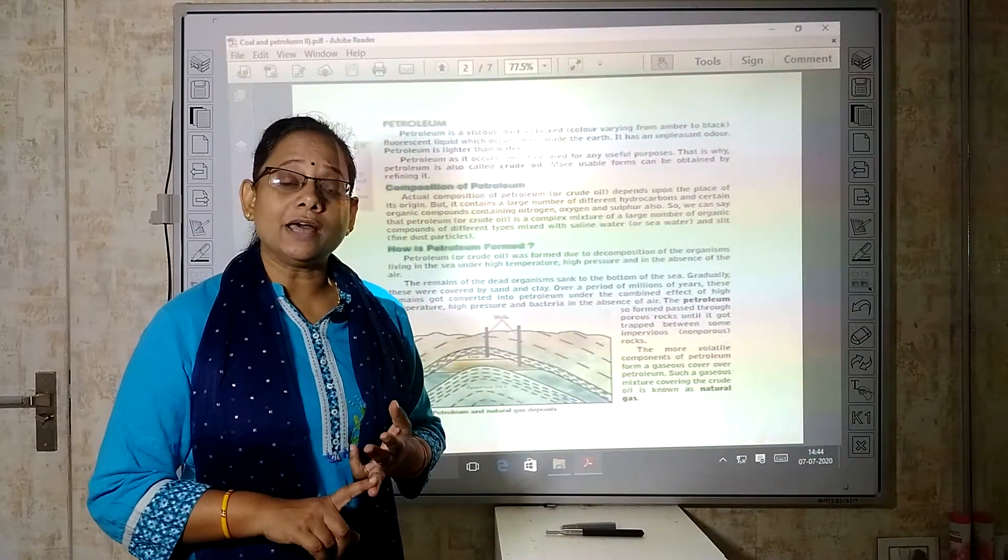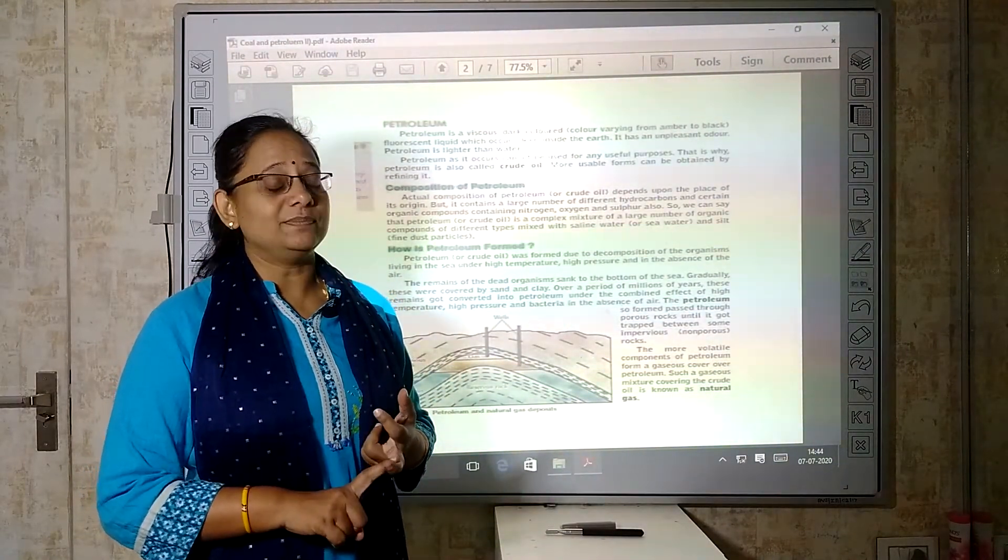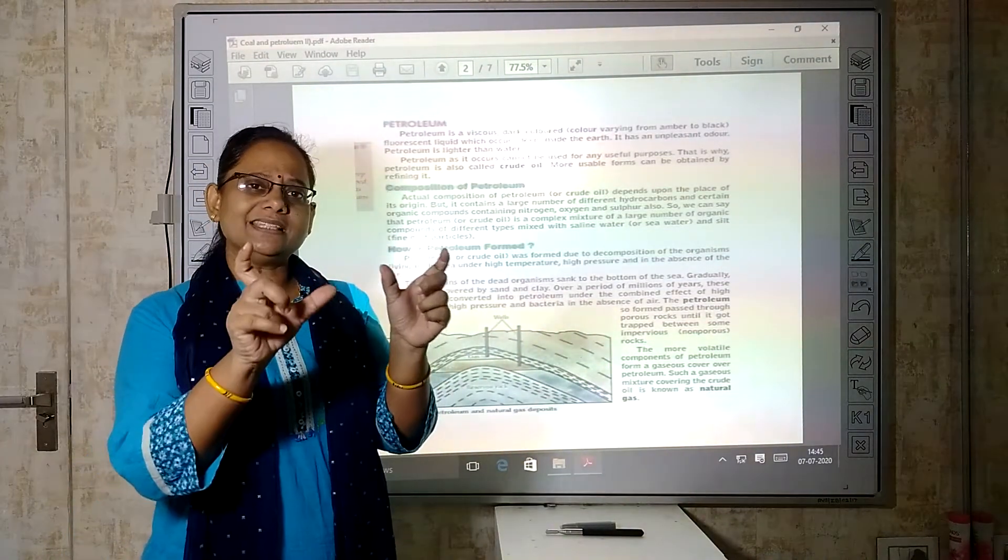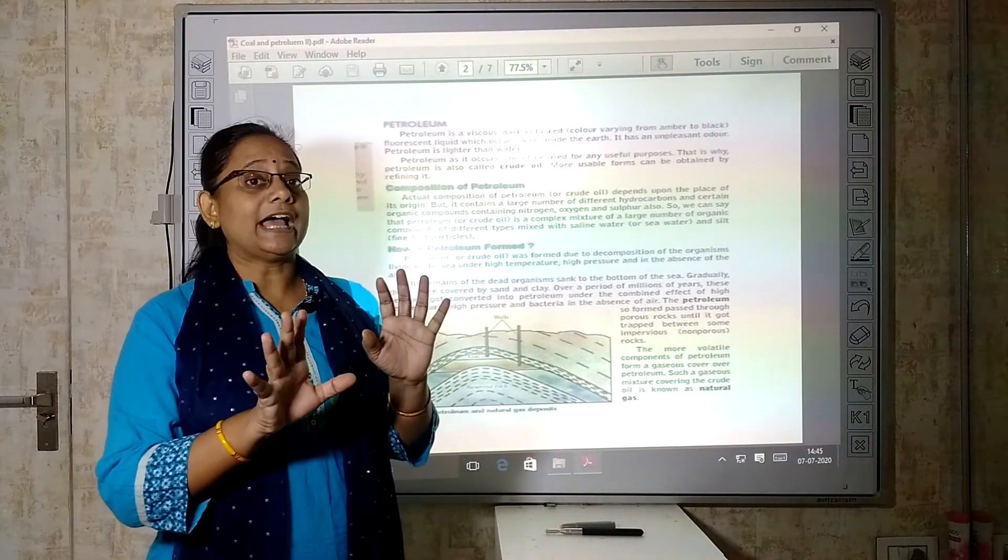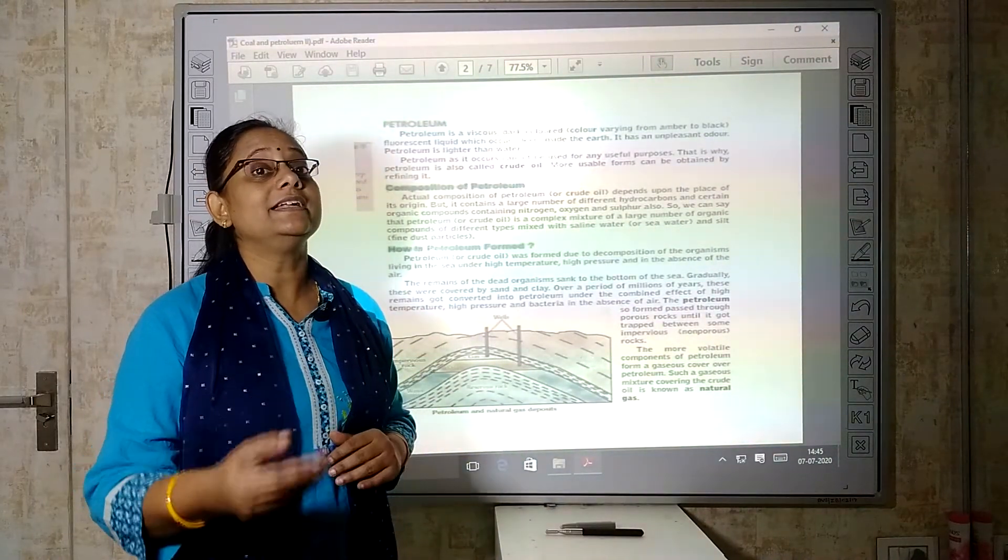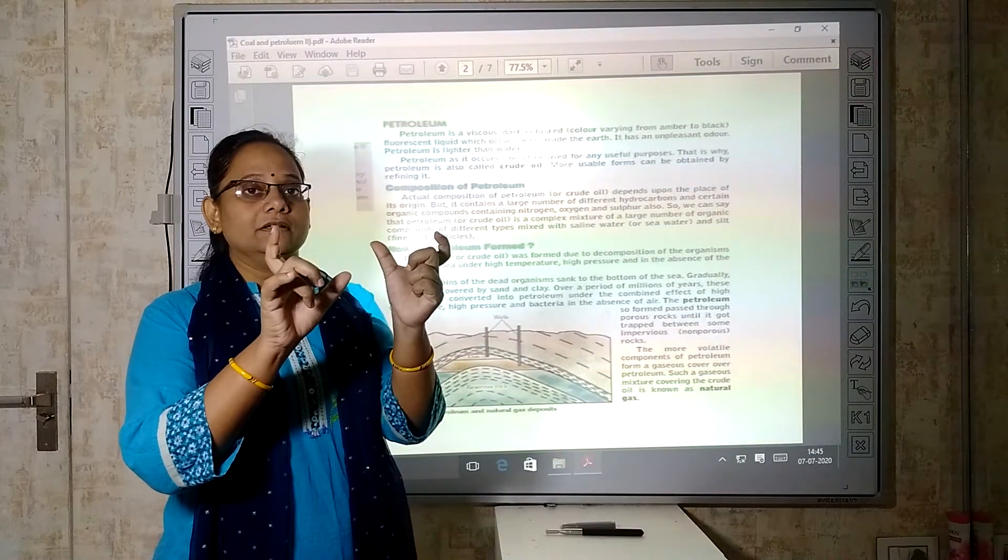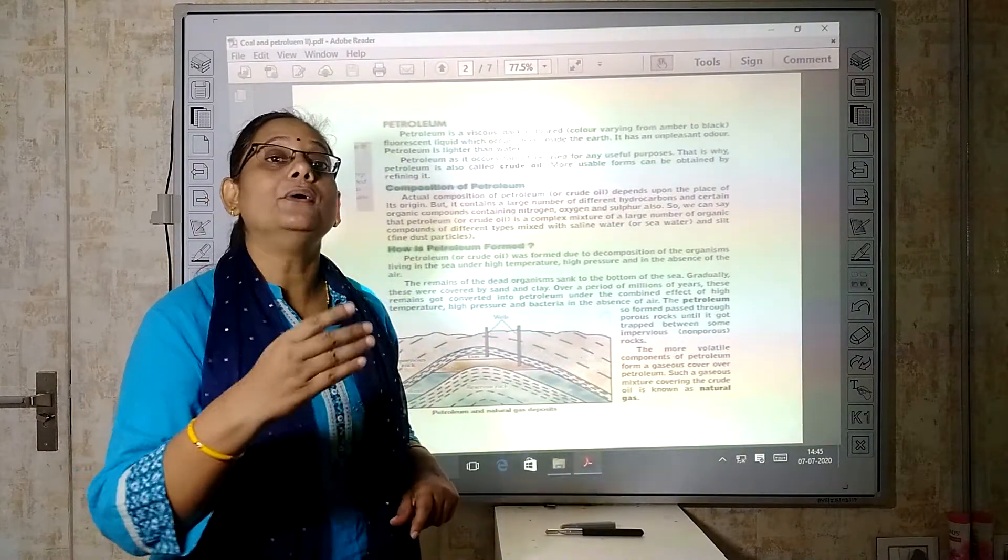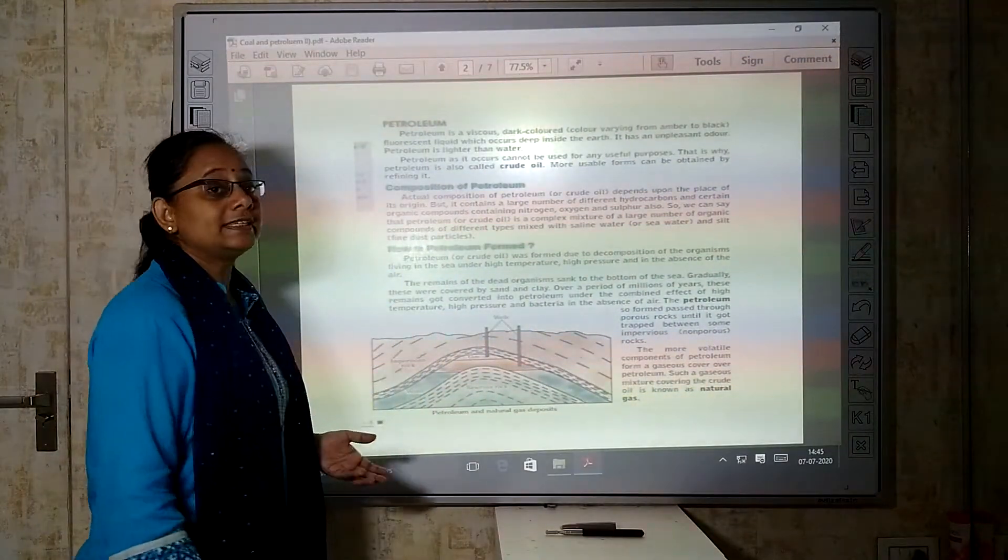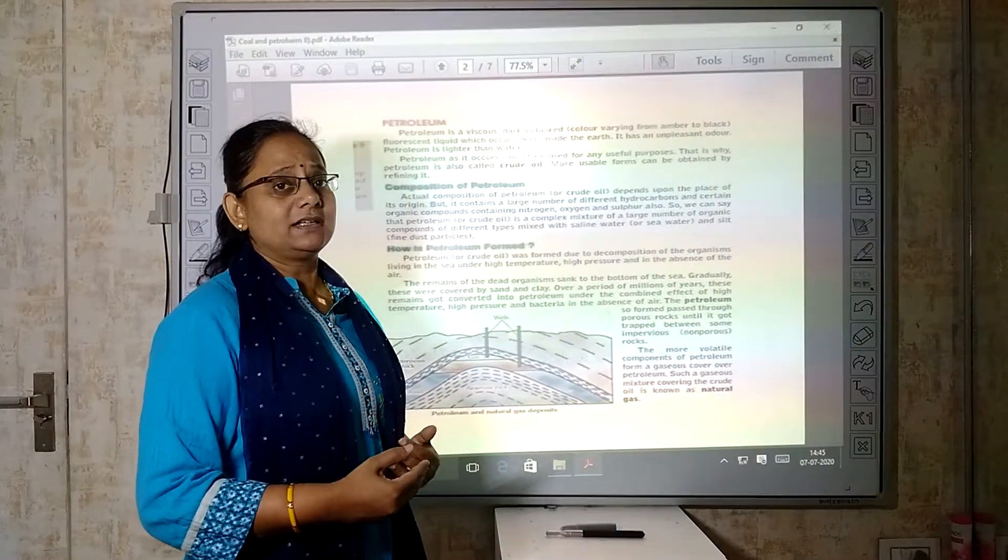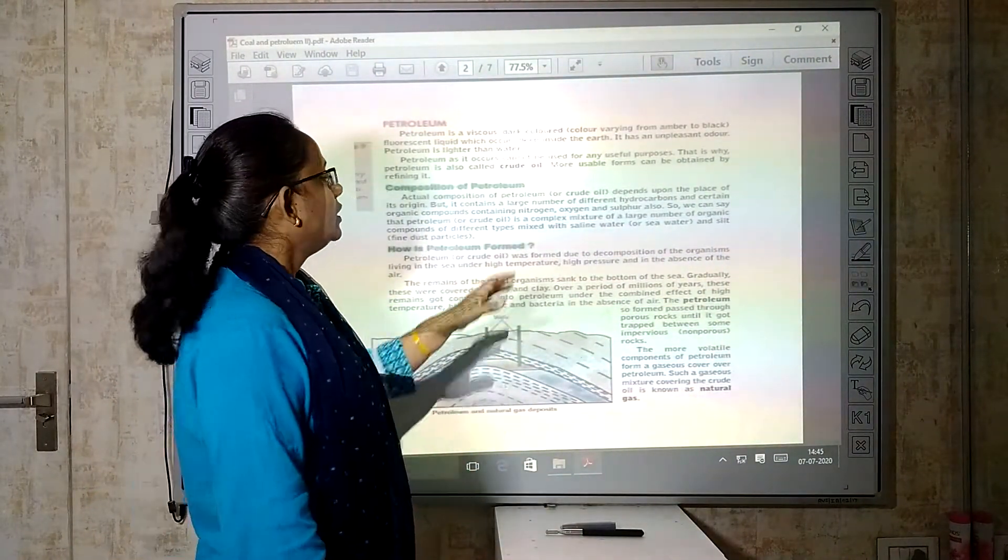Now, what are hydrocarbons? Hydrogen plus carbons form hydrocarbons. That is, it is a mixture of hydrogen plus carbon. Carbon, I have told you, has more content in the coal. So, hydrogen and carbon both of these form hydrocarbons, and nitrogen, oxygen, sulfur and organic solvents.